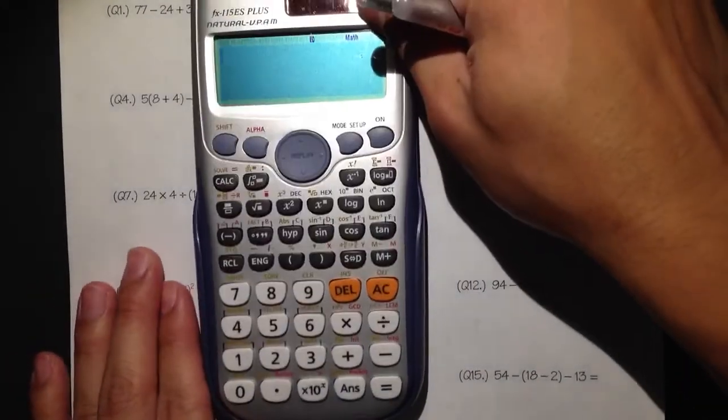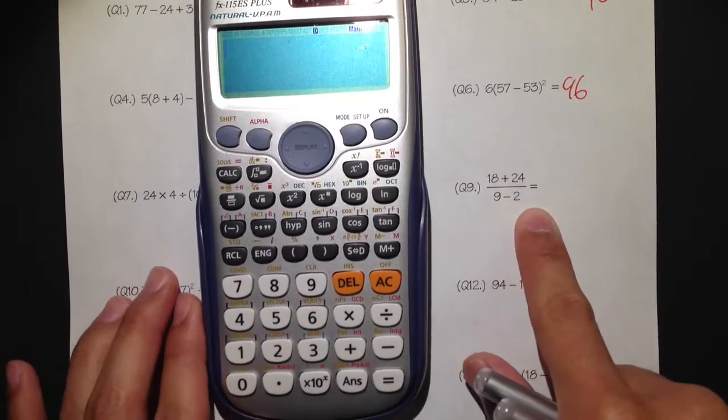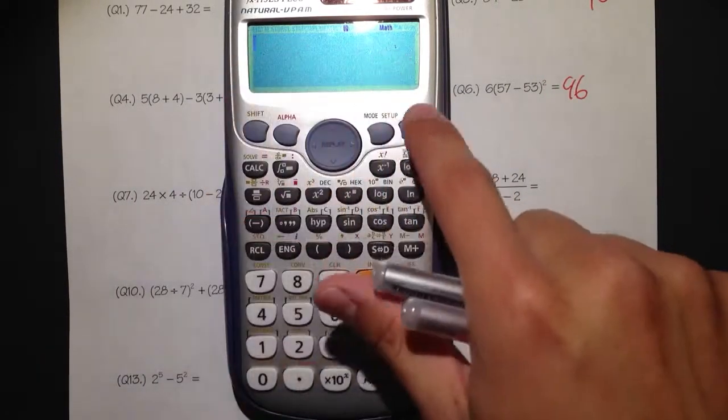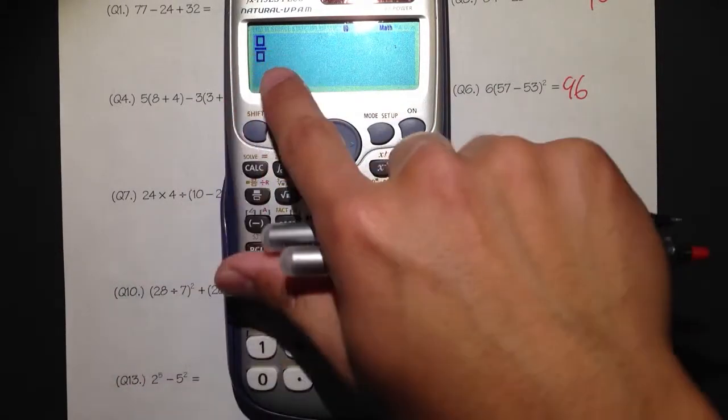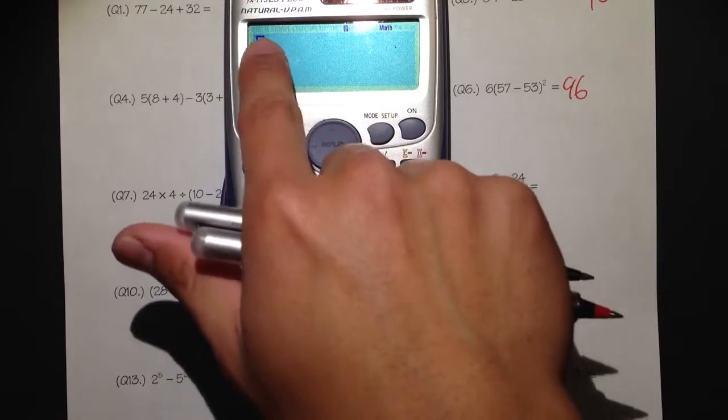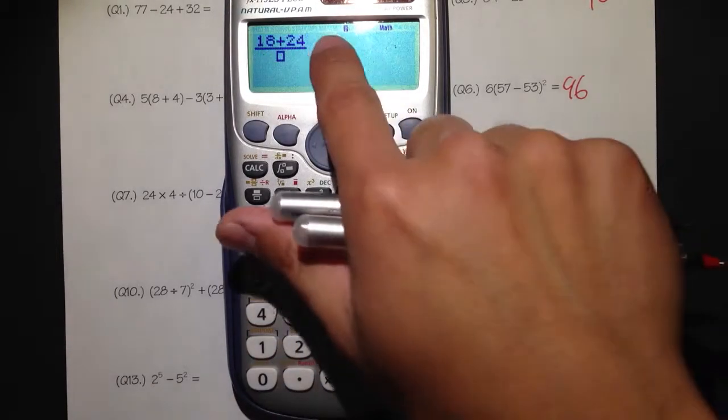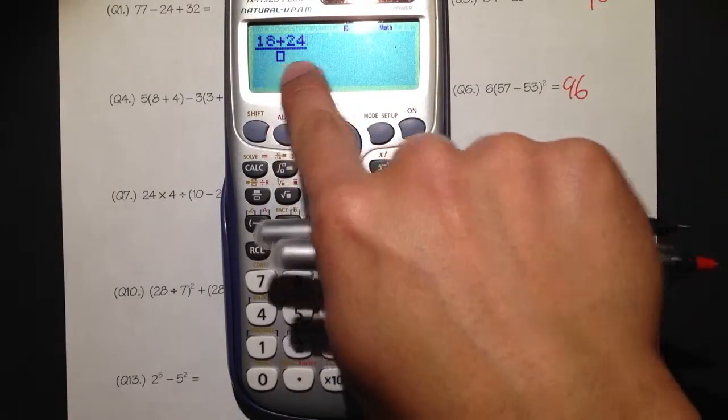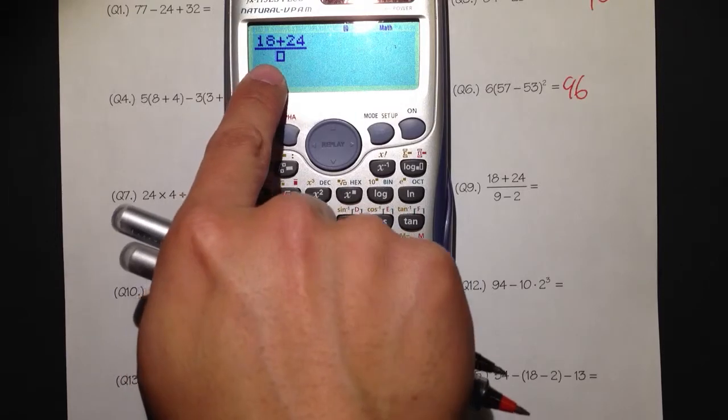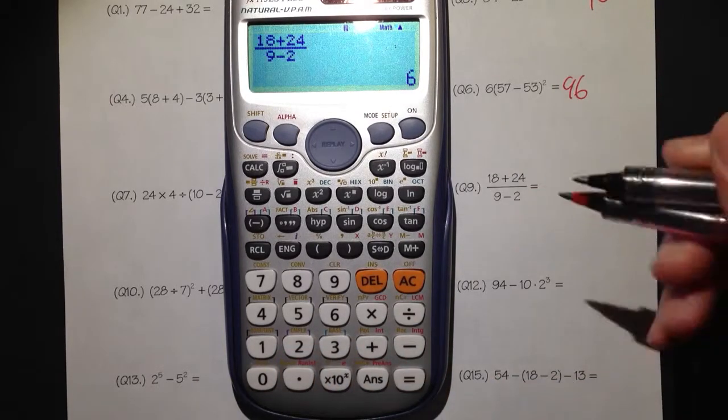Now, let's see. Next one, we have a fraction: 18 plus 24 over 9 minus 2. When you have a fraction, you need to come up with a fraction first. This is the fraction key. Once you hit the fraction key, it allows you to enter whatever you have on the top, and then we can move to the bottom to enter whatever that we have on the bottom. Let's take care of the top first. We have 18 plus 24. Then we need to move this thing, the cursor, down to the bottom. You need to press this button, the down button. Then you see that the cursor went down to the denominator. Then we can just continue by putting down 9 minus 2 equal, and we have the answer 6.